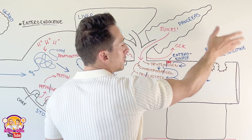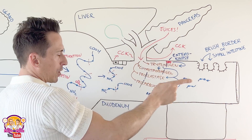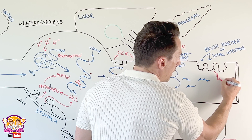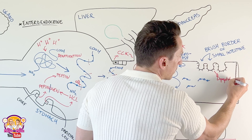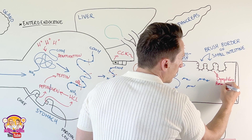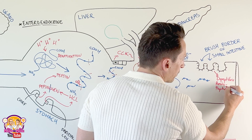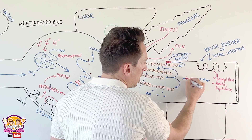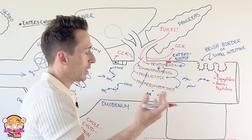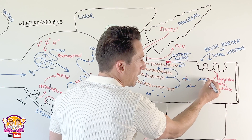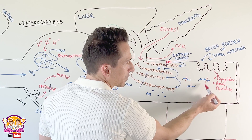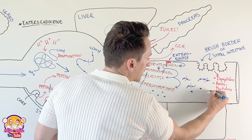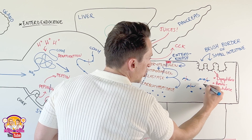We're now in the jejunum at the brush border cells. Brush border cells produce brush border enzymes, and the enzymes they produce include dipeptidase and aminopeptidase. Dipeptidase chops the dipeptides into amino acids, and aminopeptidase chops the ends off. The great thing about chopping the ends off the tripeptides is that once the ends are chopped off, the dipeptidase can chop the rest. So what are we left with? We are left with individual amino acids. Brilliant — we have digested our proteins.